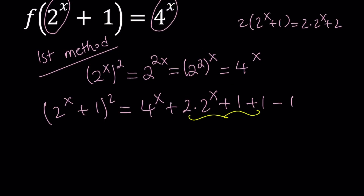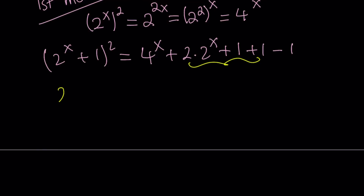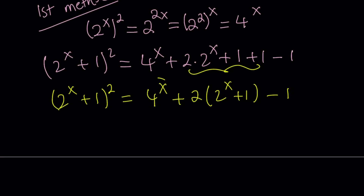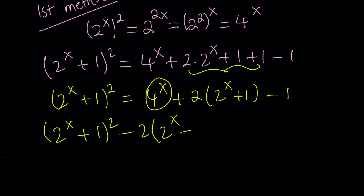This part gives us what we want, so let's rewrite it. 2 to the power x plus 1, quantity squared, equals 4 to the power x plus 2 times 2 to the power x plus 1, minus 1. Now we put everything except 4 to the power x on the left-hand side, isolating 4 to the power x on the right.